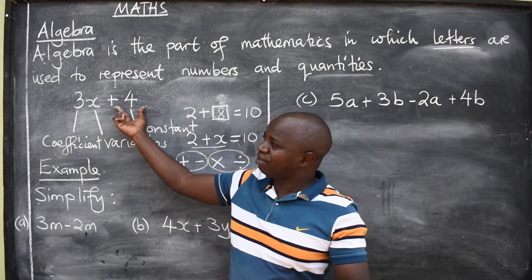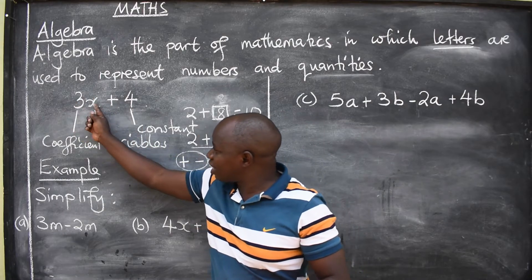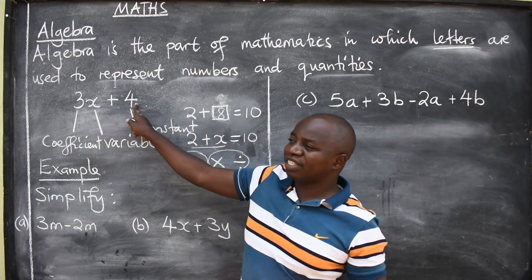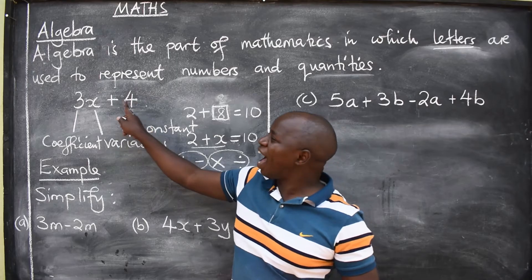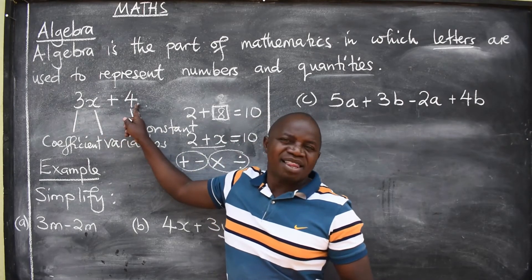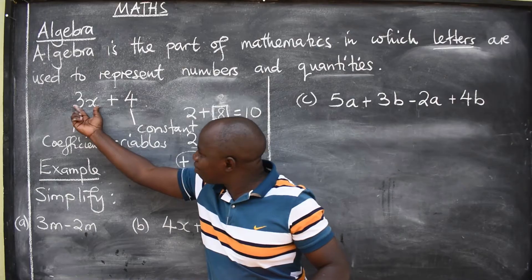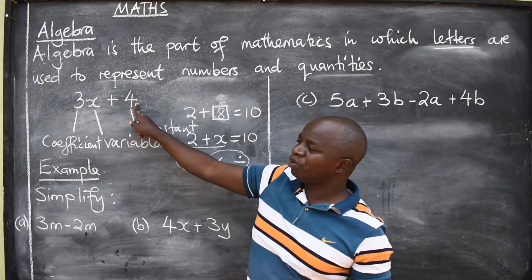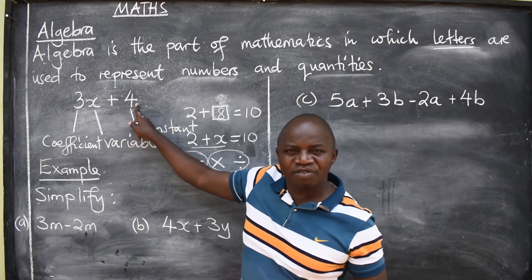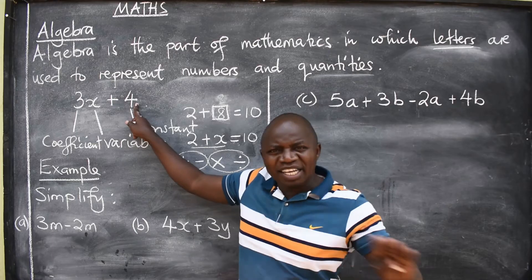We have two terms: 3X and 4. Are they the same? The answer is no. This term here has got X. Do we have X here? No. Therefore, what do the rules say? You can't add them. This will remain like that.